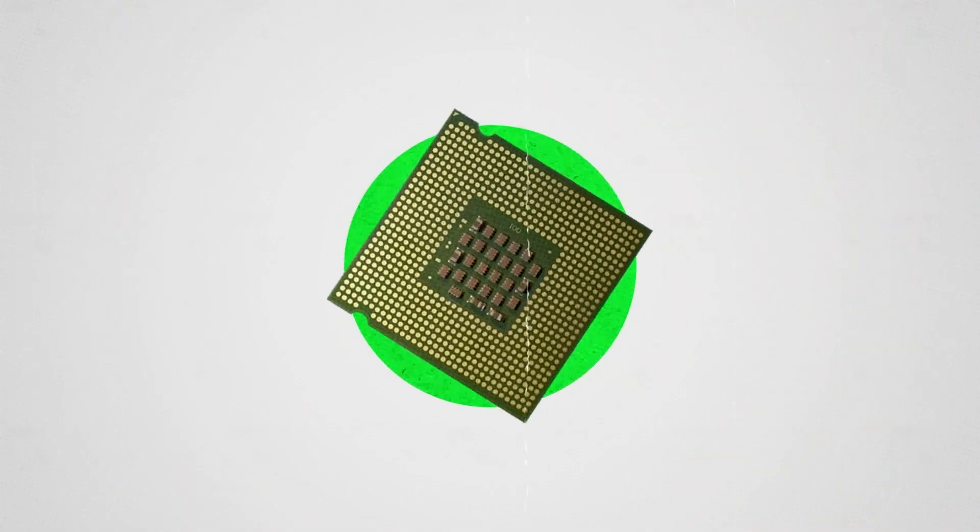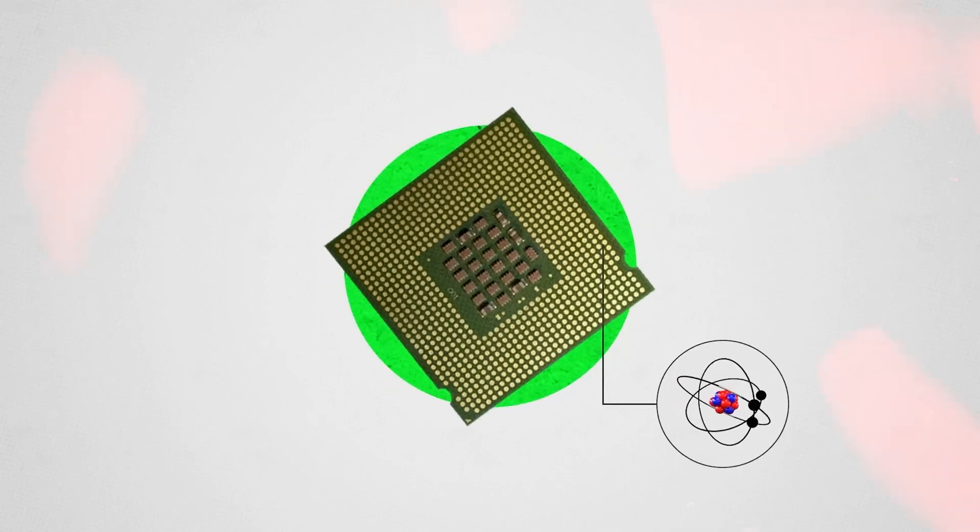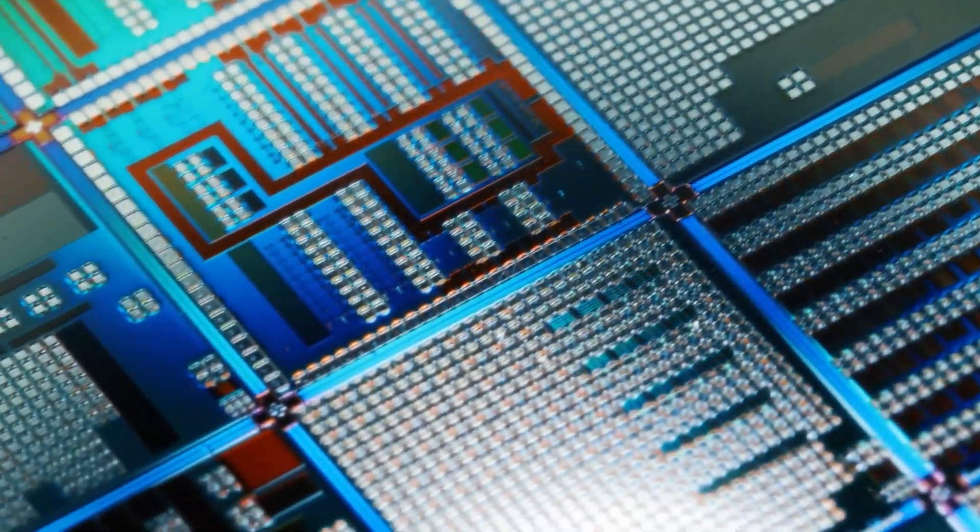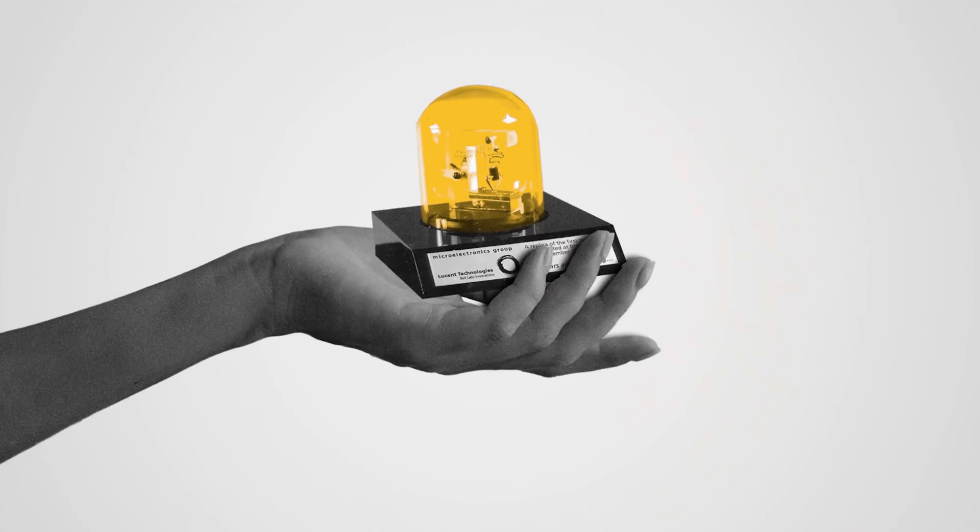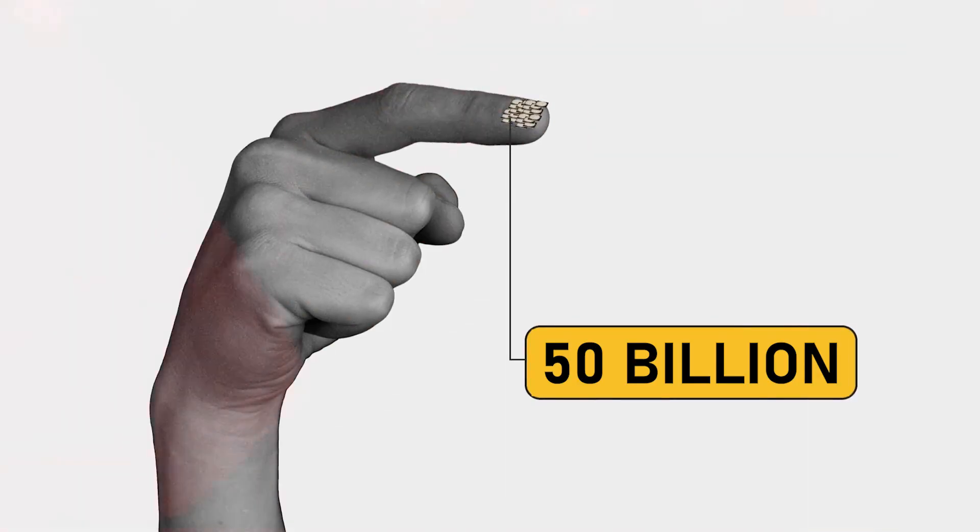Transistors are physical, solid material components, and like everything material, they are also made of atoms. We are reaching the size limit for these transistors. The first transistor could fit in the palm of your hand, and today 50 billion of them can fit on the area of your fingernail.